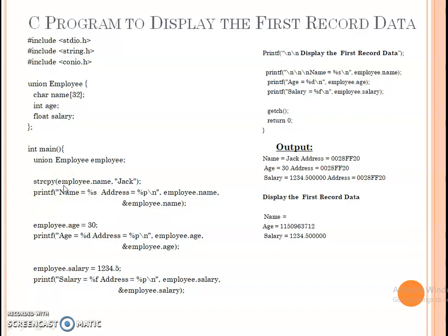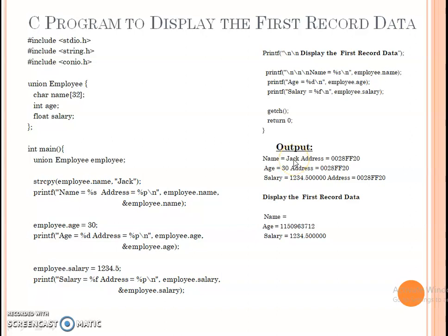The first statement uses strcpy, which is a string function. To use it, you must include the string.h header file. Using strcpy, we copy data into employee dot name. The name is set to 'JAK'. After that, we print the name and its address using the percent P format specifier to display the memory address of employee dot name.